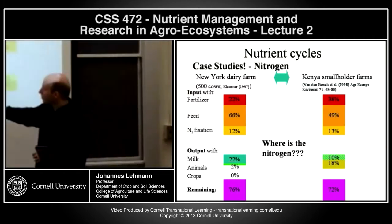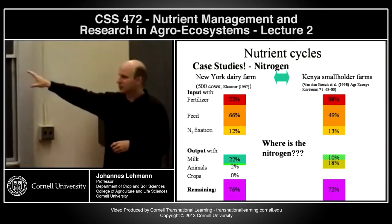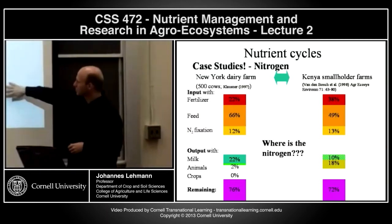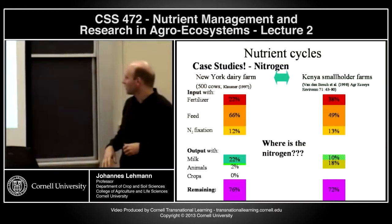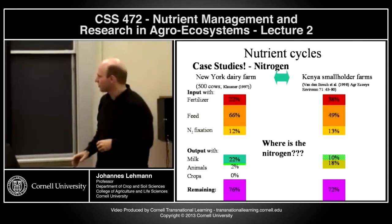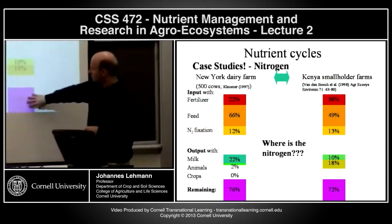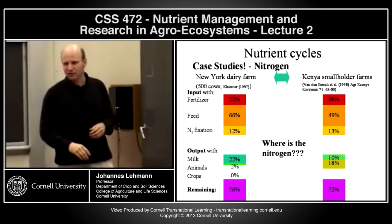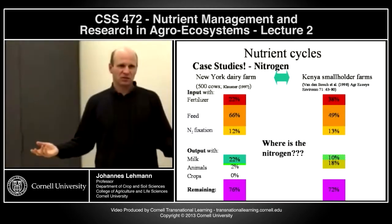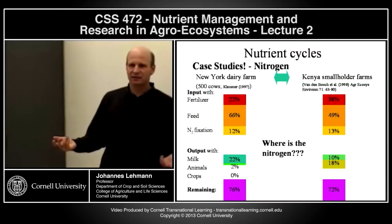For nitrogen output, in the New York farm: about 22% with milk, 2% with animals, 0% with crop because it's a strict dairy farm. In the Kenya smallholder system there are also crop outputs. But in both cases, about 70–80% of nitrogen input remains in the ecosystem. So the question is: where does it go? We're putting 100% in, and only about 20–30% goes out with products.